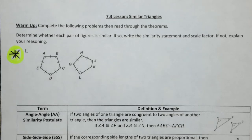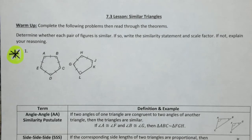All right, so now we're on to the 7.3 lesson. We're now going to move from similar polygons to similar triangles. The warm-up here will deal with looking at whether these are similar or not and scale factor. This will pertain to your 7.2 lesson. This is the warm-up that you'll try on your own and we'll go over in class.